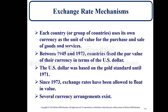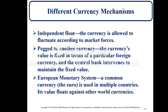Several currency arrangements — exchange rate mechanisms — exist. An independent float means the currency is allowed to fluctuate according to market forces. Pegged to another currency means the currency's value is fixed in terms of a particular foreign currency, and the central bank intervenes to maintain the fixed value. The European monetary system uses a common currency: the euro is used in multiple countries and its value floats against other world currencies.